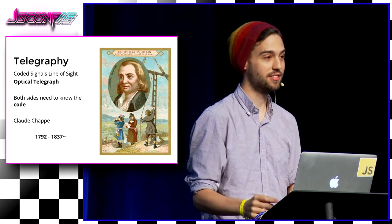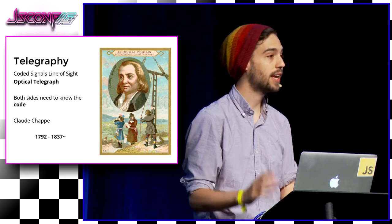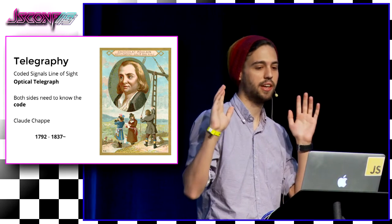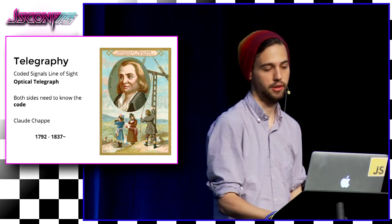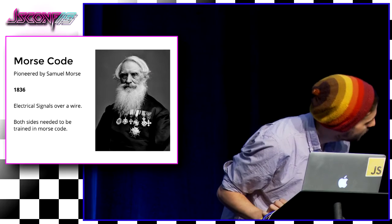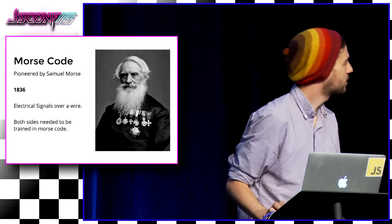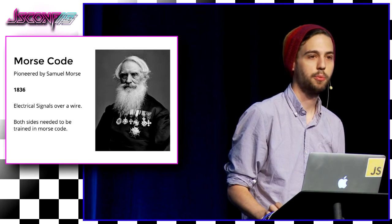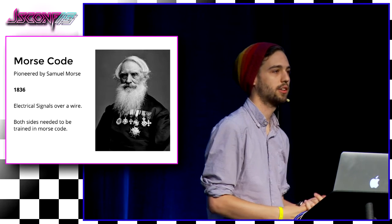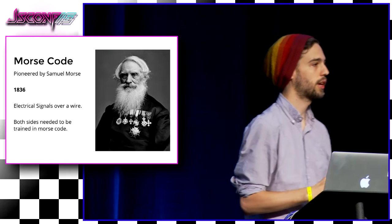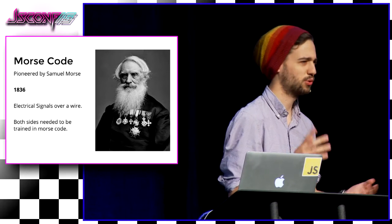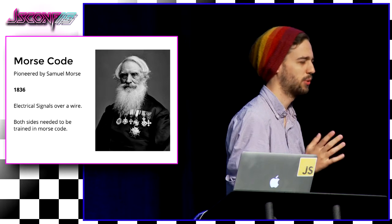This system was used in France widely up until around 1837. It was a revolution — there were these lines all over France and people were like, this is modern-day living. Then along came Samuel Morse. France was leading the front on remote communications, but the United States was still in the dark ages. There was one optical telegraph line but it wasn't really used.